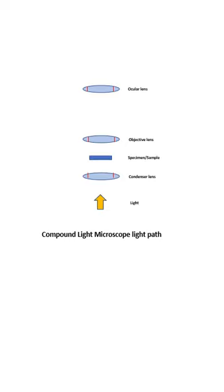Place one specimen as a rectangle, make one eye, put one V, make a cross, make a second cross, make a cone on the top. That's how you can draw a compound light microscope light path. Thank you.